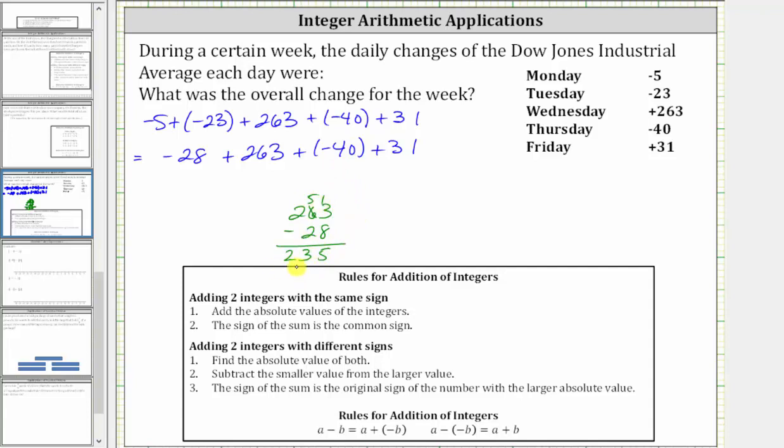This difference is positive 235, and because the positive 263 had the larger absolute value, the sum is positive 235. And again, we should recognize this, because the positive 263 is going to outweigh the negative 28.